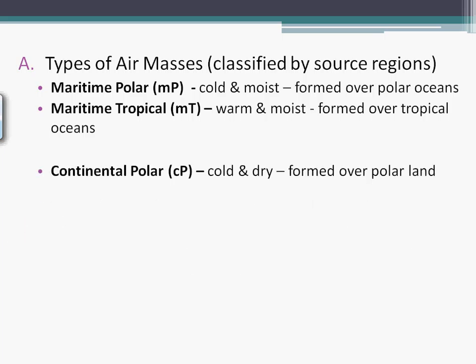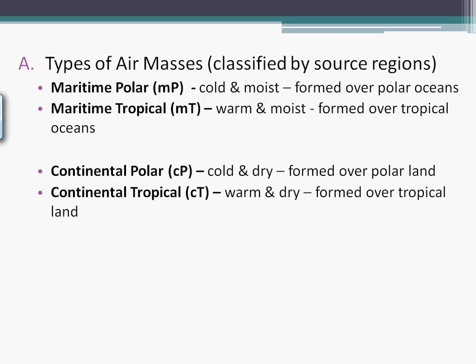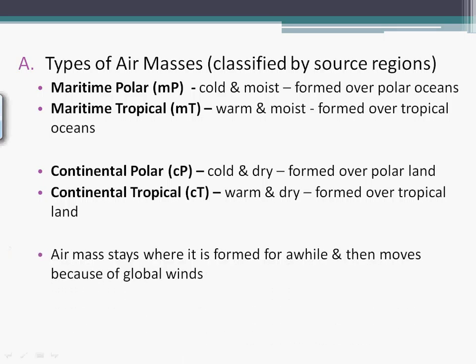Continental polar — where would that be in North America? Canada. Alaska. And sometimes if it's pushing down over us, maybe even here. Continental tropical in North America — we're thinking Mexico, Texas, Arizona, California. An air mass is this region that stays together. It's moving because it's going from high pressure to low pressure.